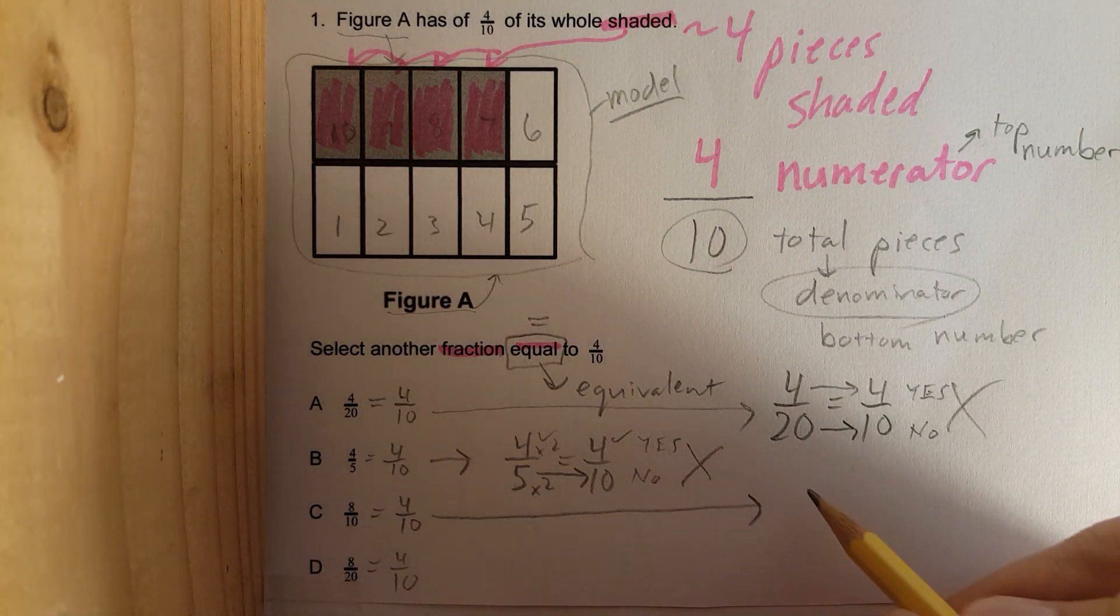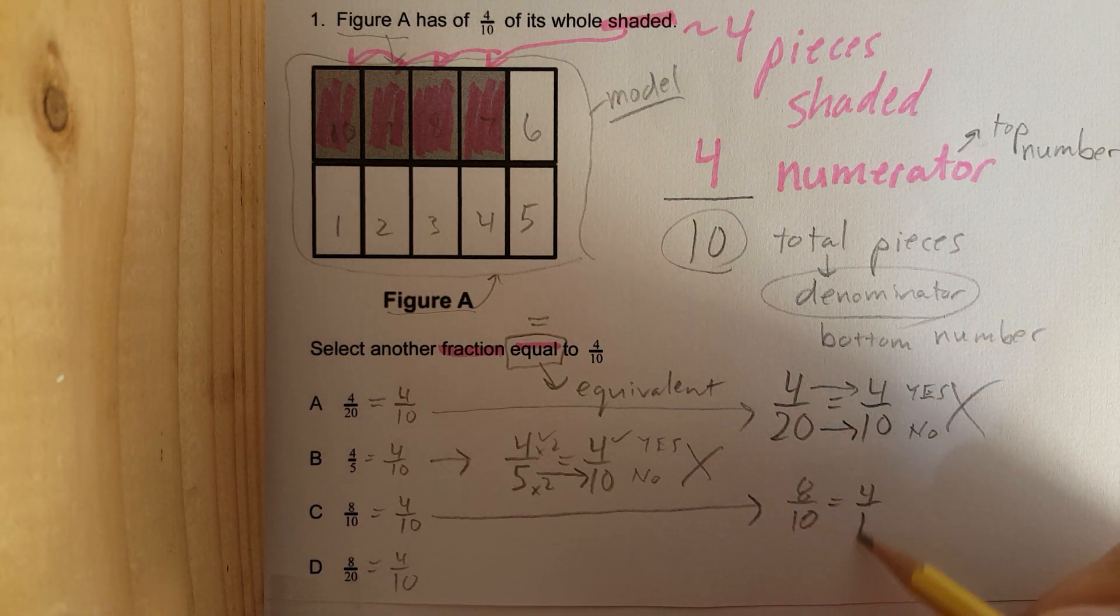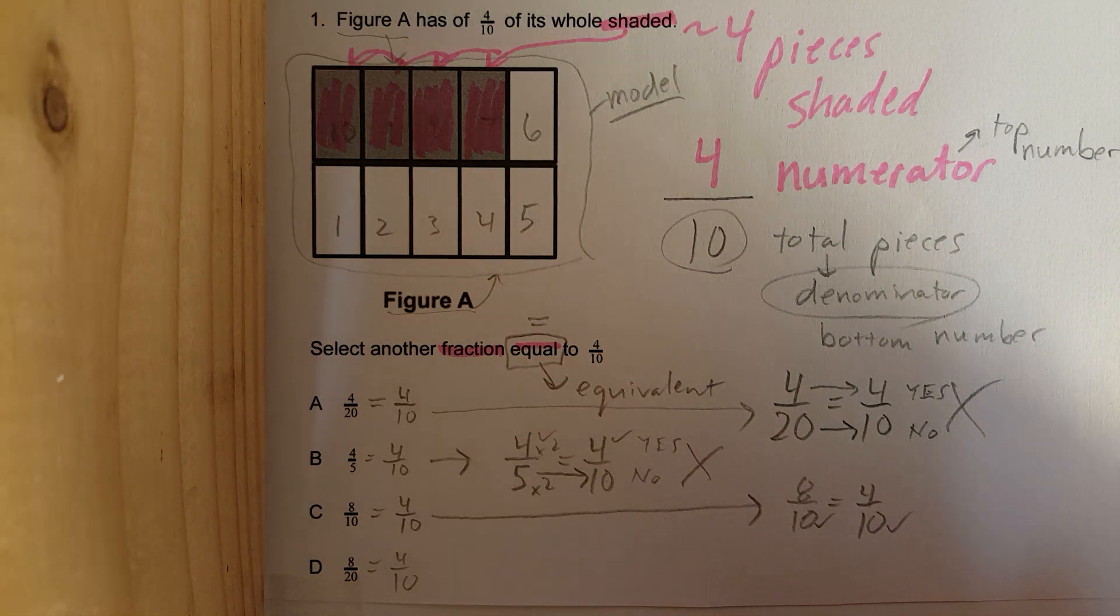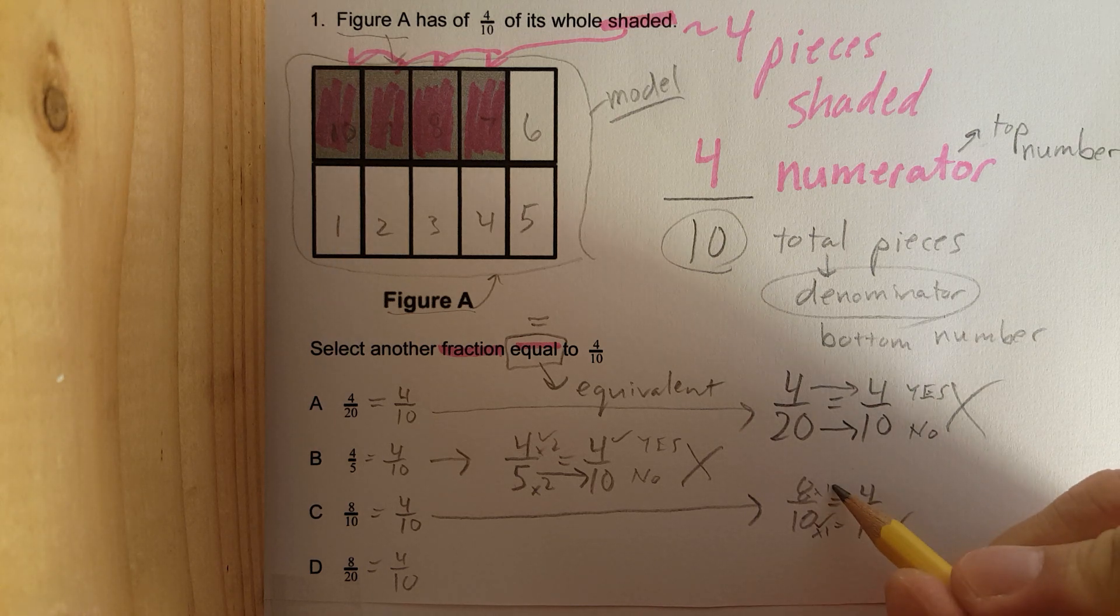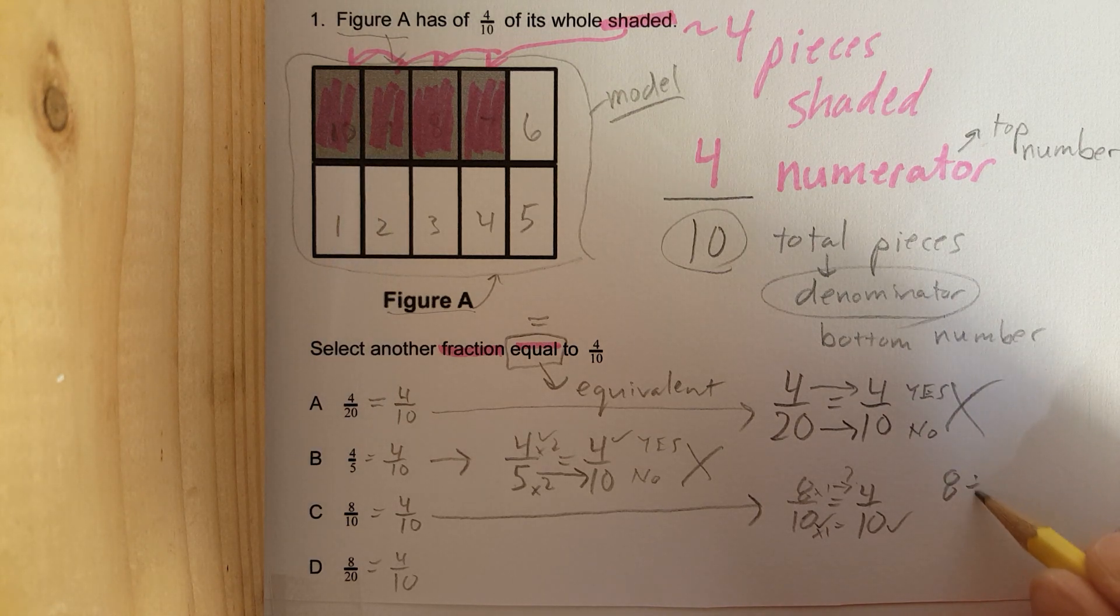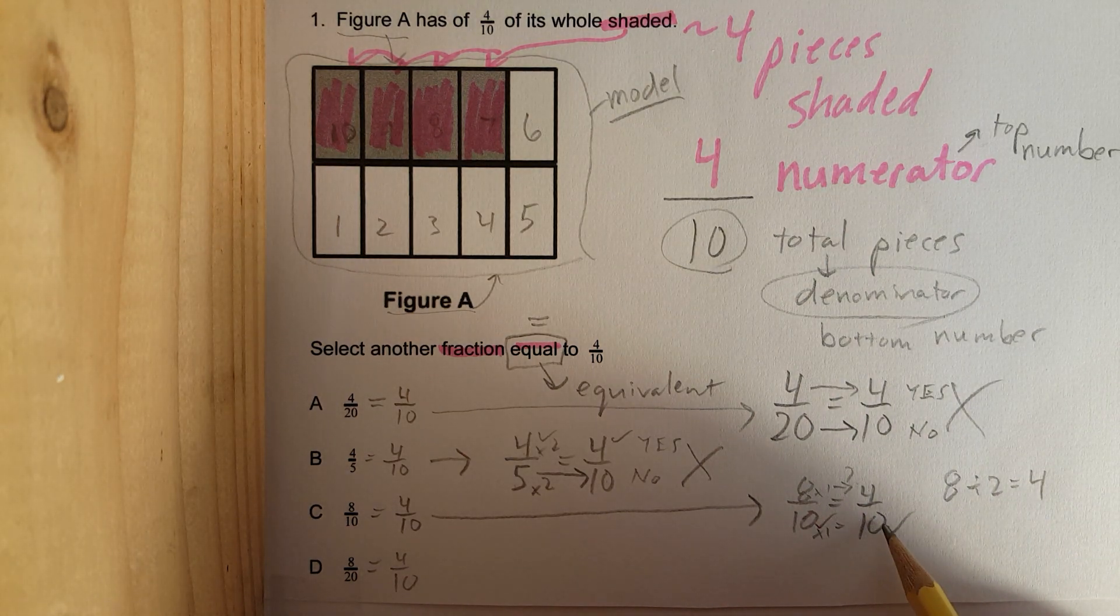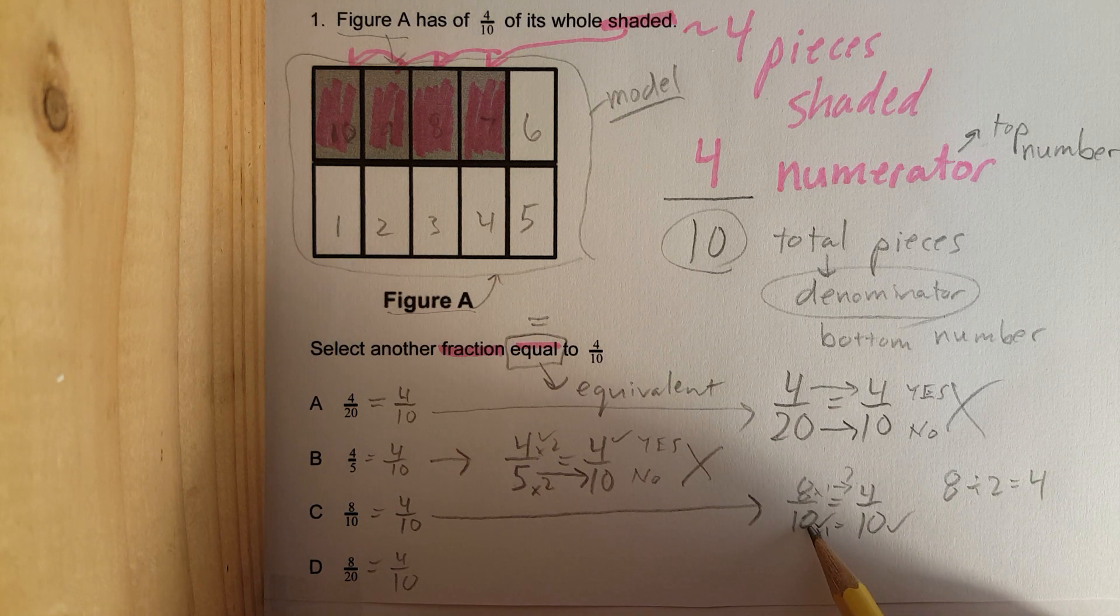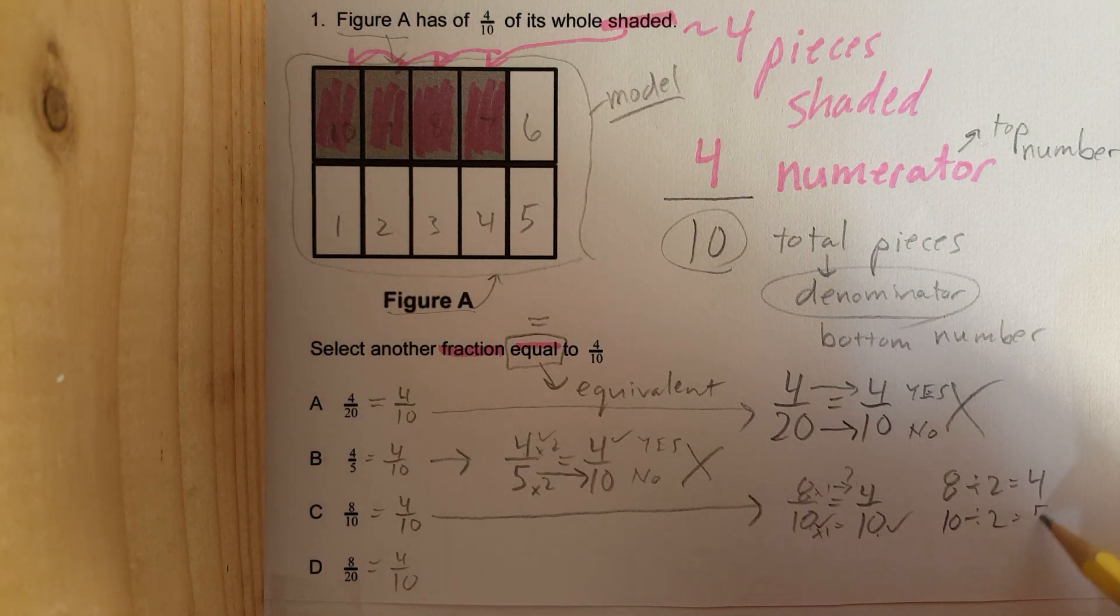Let's go to the next one. 8 over 10. Is that equal to 4 over 10? Okay? These two are equal to each other. 10 times 1 is 10. 8 times 1 is not 4. In fact, I know my division facts. 8 divided by 2 equals 4. Whatever I do to the top number, the numerator, I need to do to the bottom number, or the denominator. 10 divided by 2 is not 10. That would be 5. So, this one doesn't work.